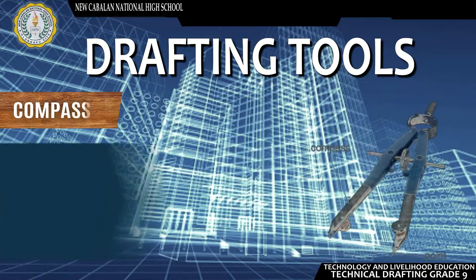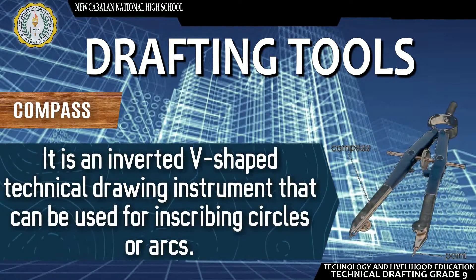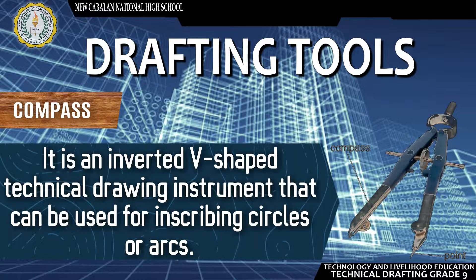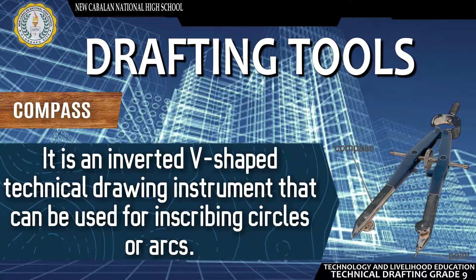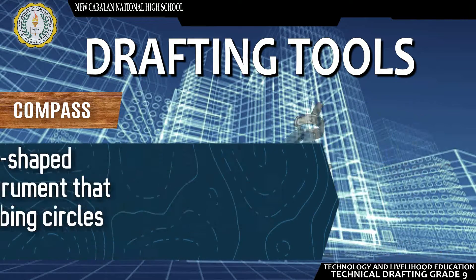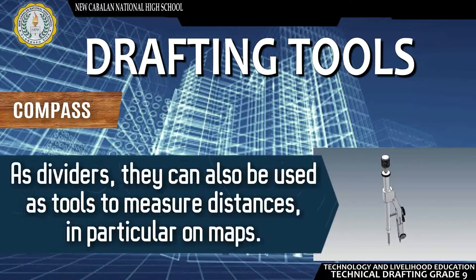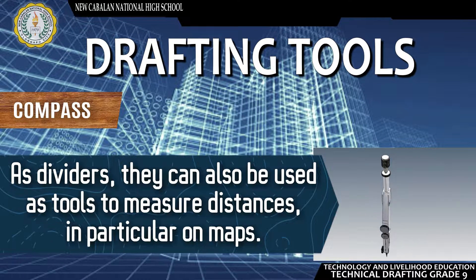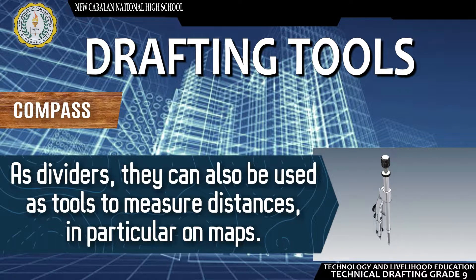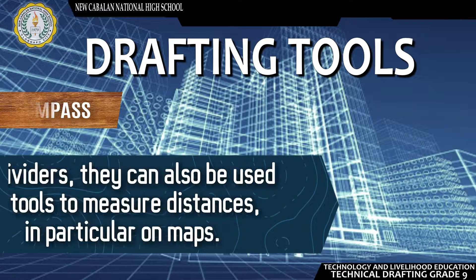Compass — It is an inverted V-shaped technical drawing instrument that can be used for inscribing circles or arcs. As dividers, they can also be used as tools to measure distances, in particular on maps.